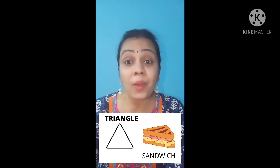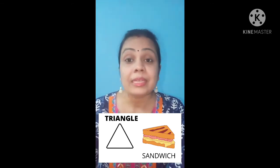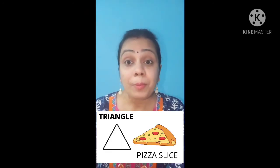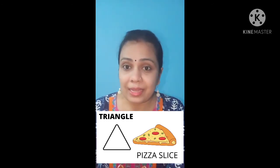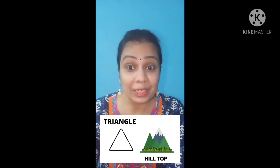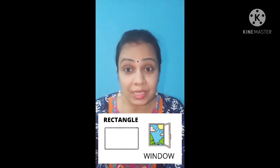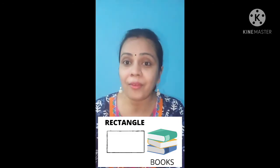This is triangle. Sandwich is triangle in shape. Pizza slice is triangle in shape. Hill top is triangle in shape. Next, this is rectangle. Door is rectangle. Window is rectangle. Books are rectangle in shape. Next, this is oval. Egg is oval in shape.